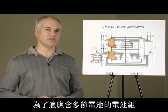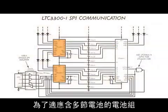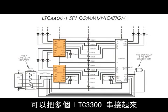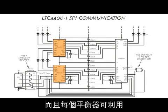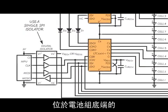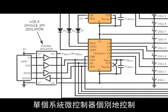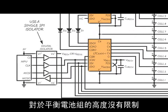To accommodate battery stacks with many cells, multiple LTC 3300s can be connected in series, and each balancer can be controlled individually from a single system microcontroller which resides at the bottom of the stack. There is no limit to the height of the balancing stack.